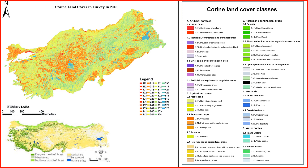3. Forests and natural reserves. Turkey has diverse ecosystems, including extensive forested areas. Forests play a crucial role in maintaining biodiversity, preventing soil erosion, and supporting sustainable wood production. Some regions are designated as natural reserves to protect unique ecosystems and wildlife.